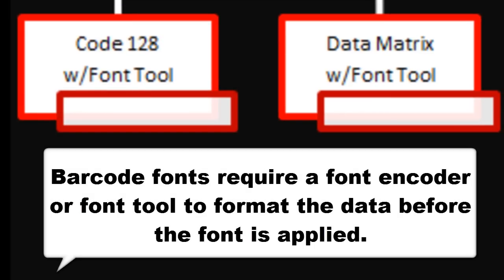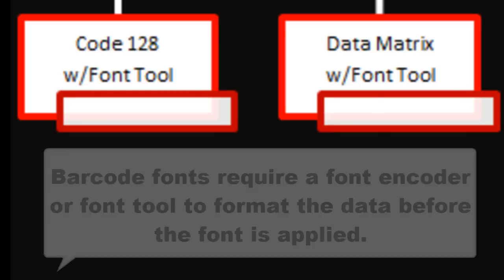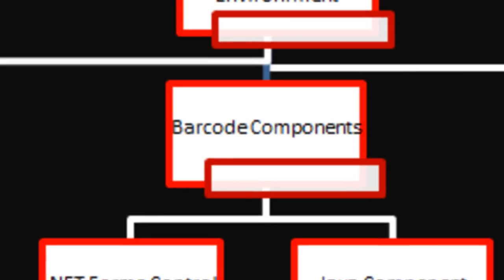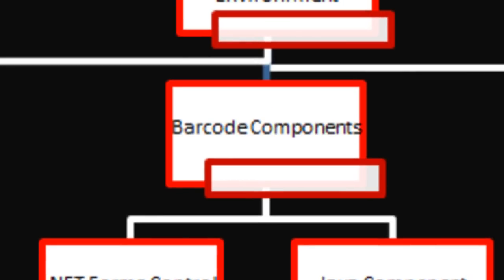Formatting the data can involve adding start and stop characters or a check digit to format the data, or by manipulating the data so that when it is interleaved into a smaller barcode, the barcode font can understand it.